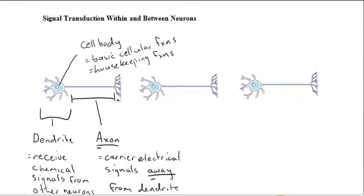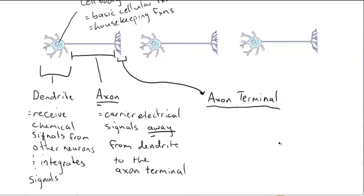And at the end here, the very end, we have the axon ends in the, that's correct, the axon terminal. And it converts the electrical signal back into a chemical signal.